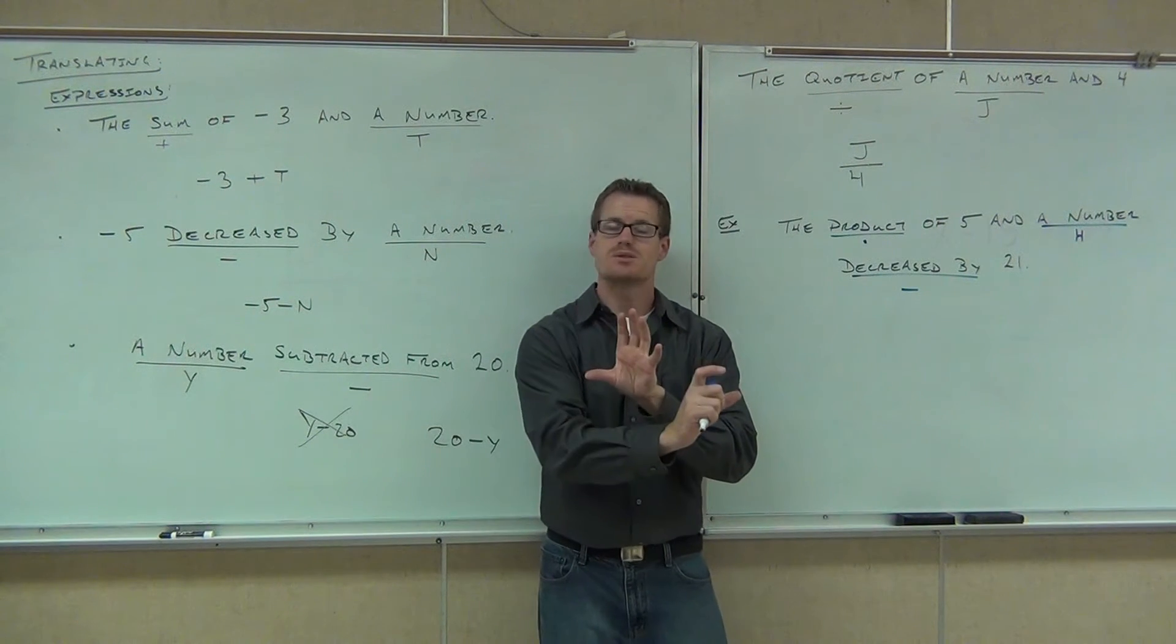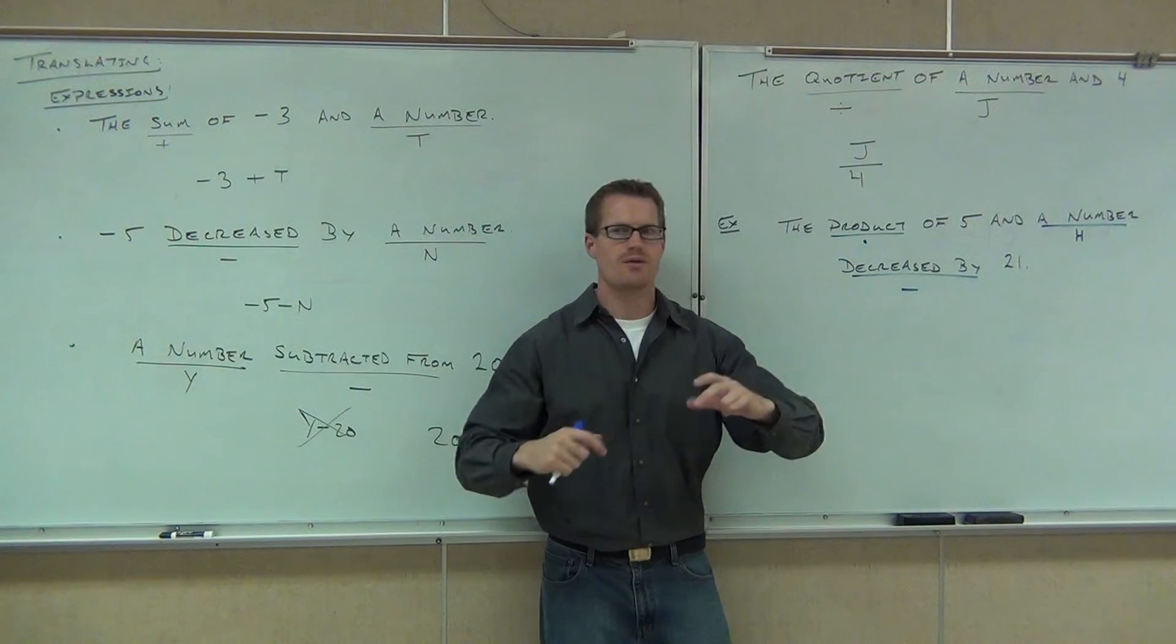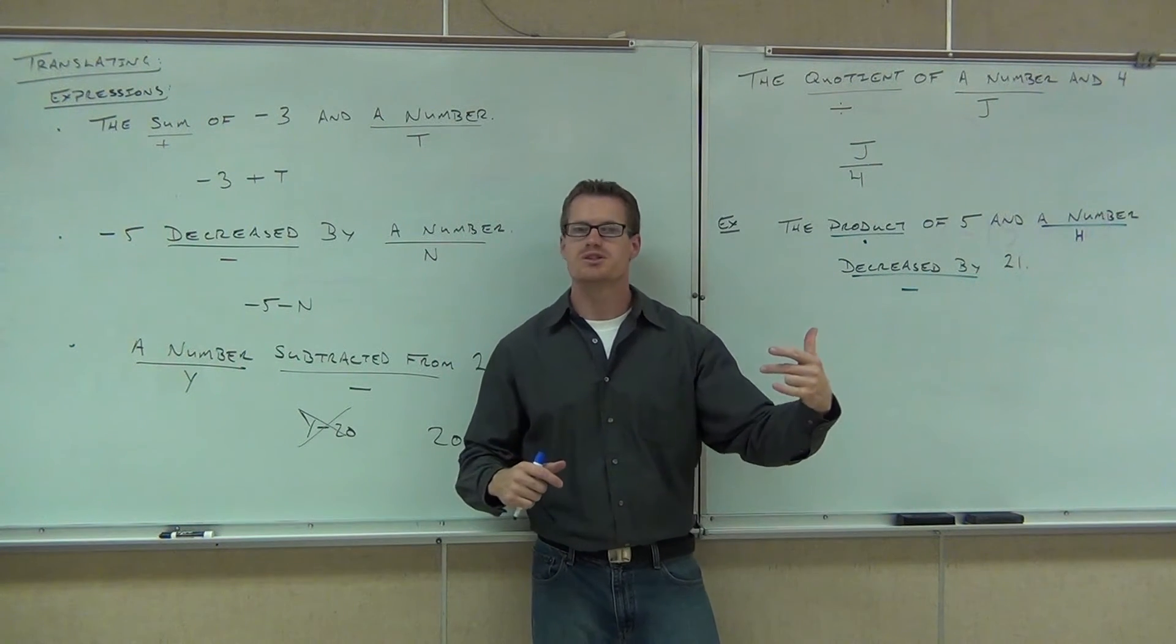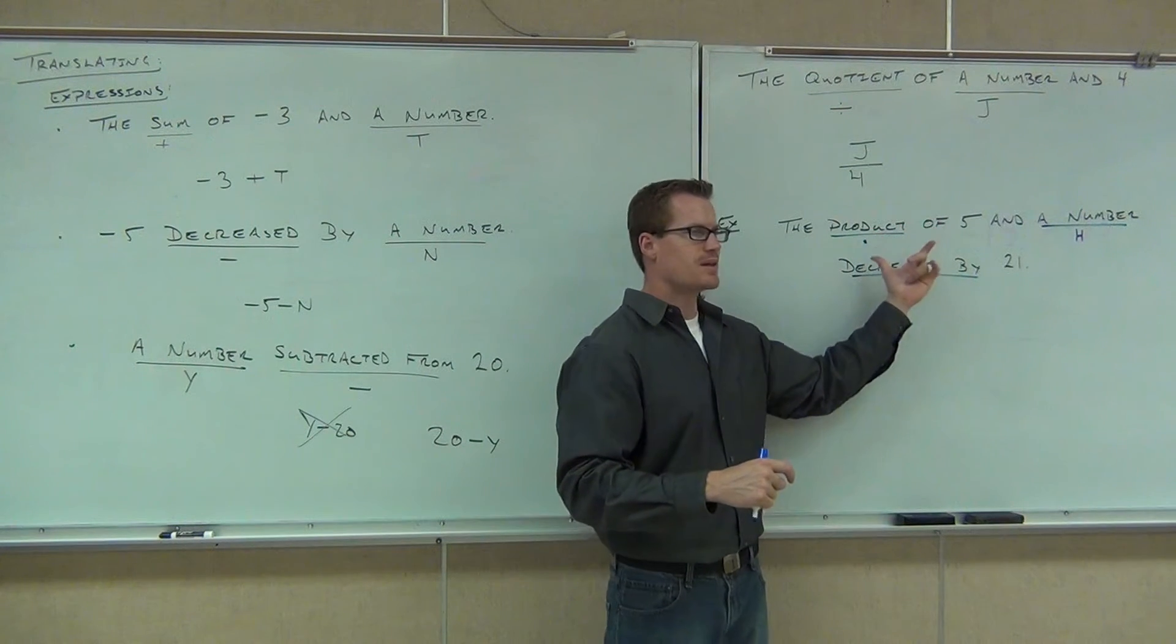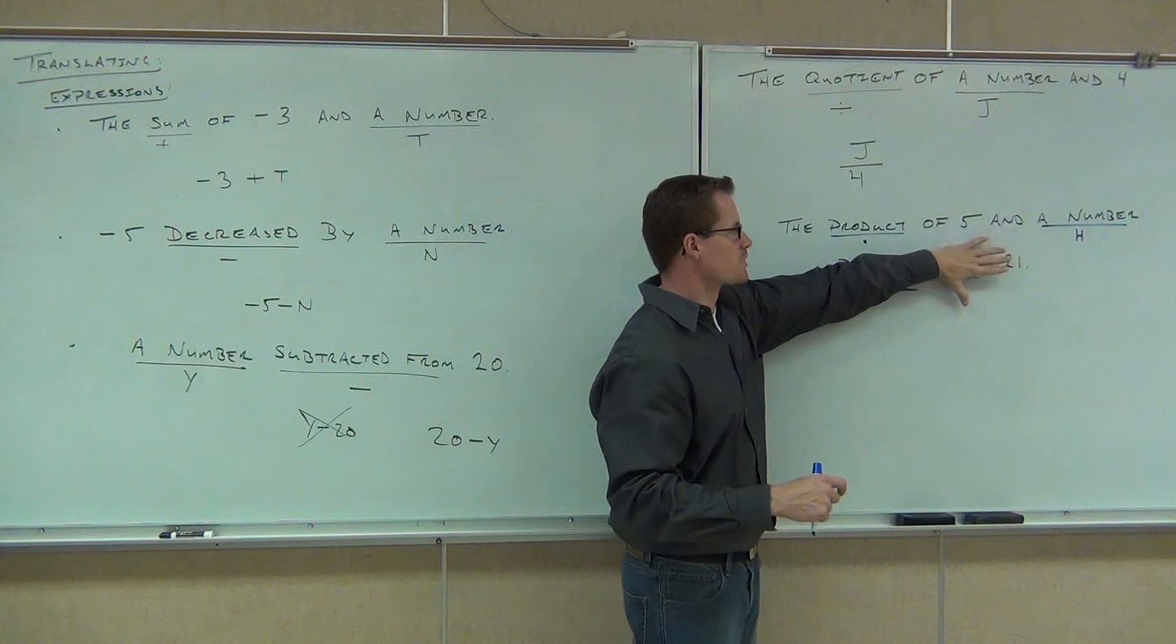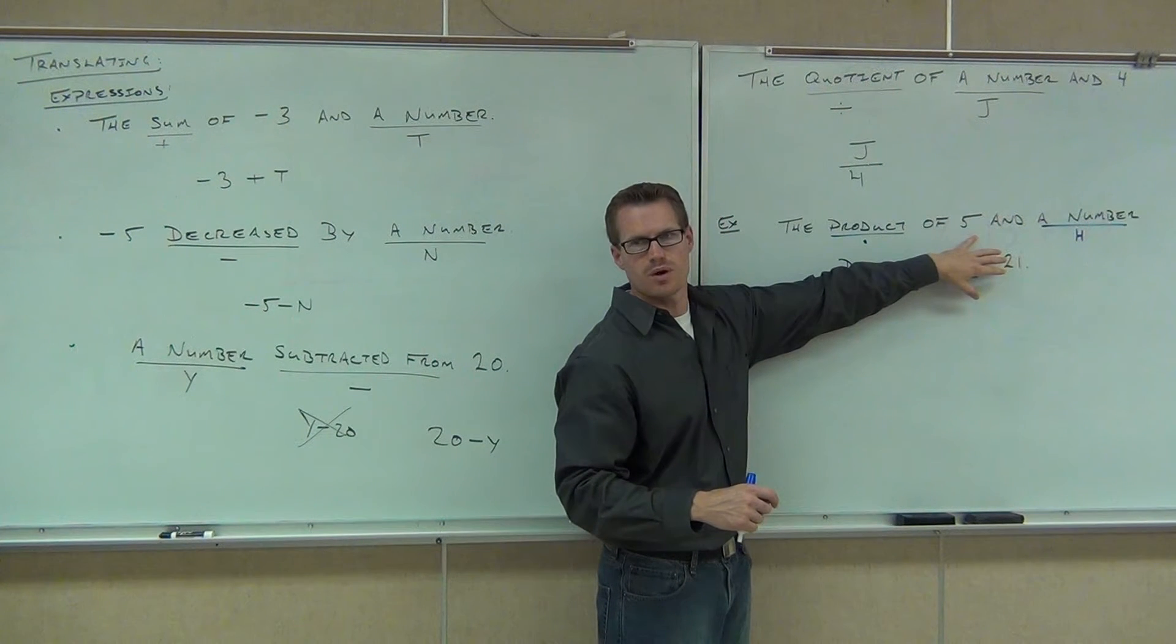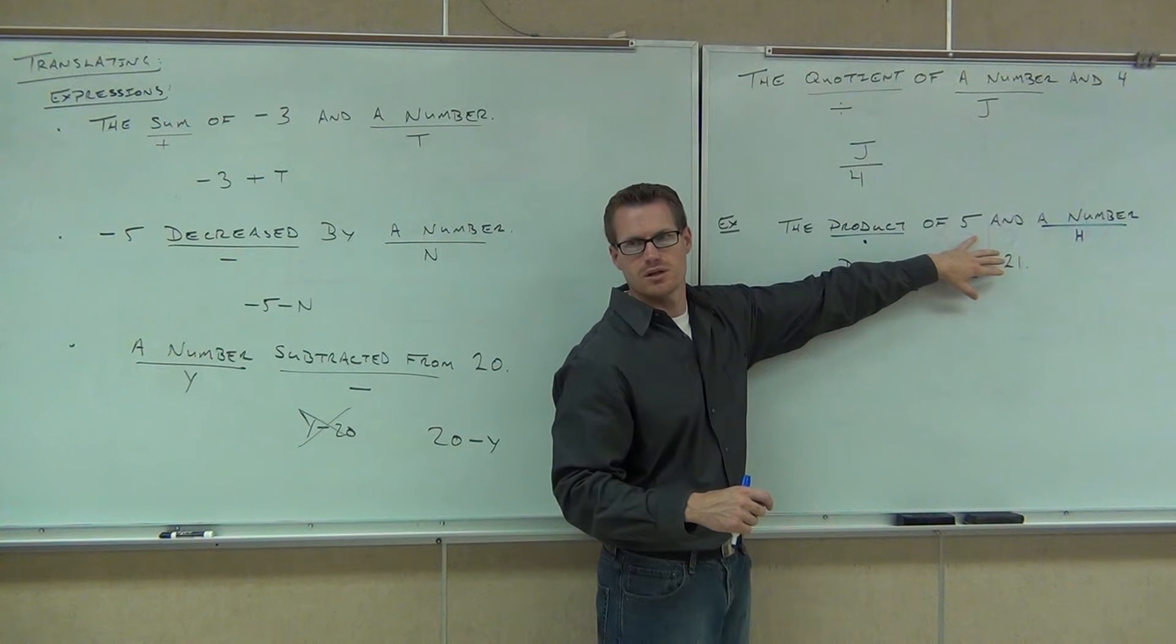Do you see the difference between that problem and that problem? Subtracted from, yeah, it comes at the end. You're taking that away from something. Here, decreased by 21 says whatever you're going to have, you're going to subtract 21 from it. So we need to identify the first part and then subtract 21 from that part. So can you write out, ignore this for a second. Can you write out the product of five and a number, H? Can you write the product of five and a number, H? How much is that?